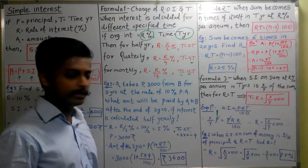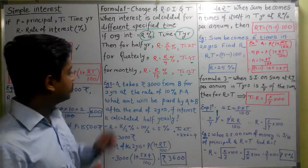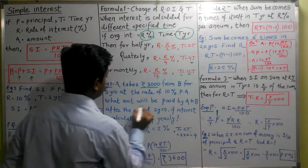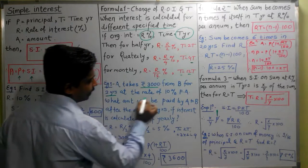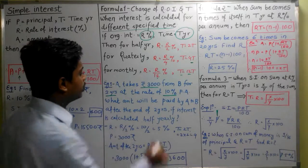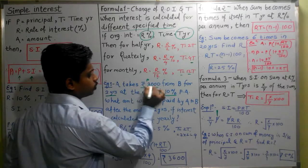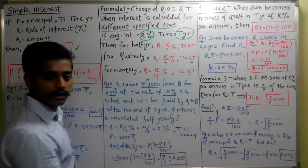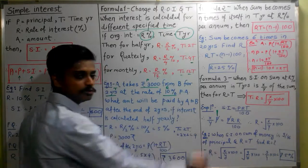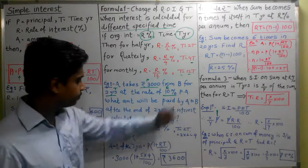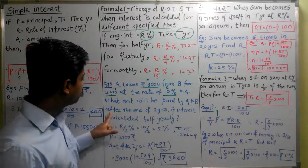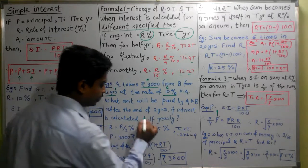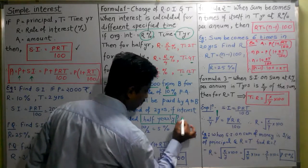You will see the idea more clearly with a practical example. A takes Rs. 3000 from B for 2 years at the rate of 10% per annum. So we have: A takes Rs. 3000, that means the principal is given. 2 years time is given. Rate of 10%, R value is given per annum. What amount will be paid by A to B after the end of 2 years if interest is calculated half yearly? Interest is calculated half yearly.